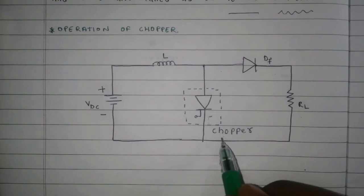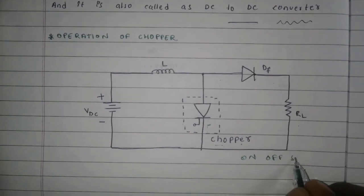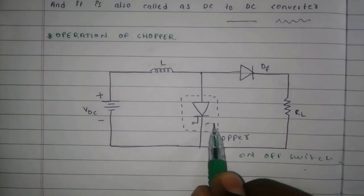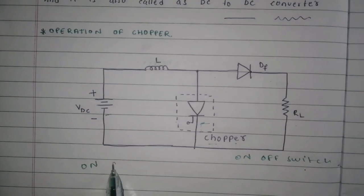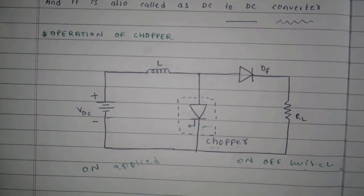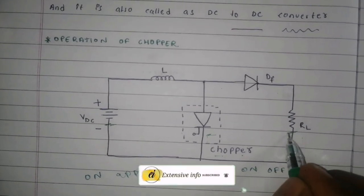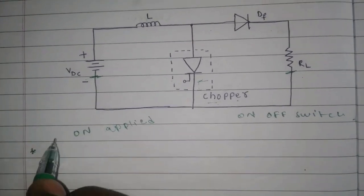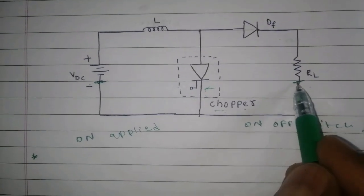This chopper is an on-off switch. The chopper is said to be on when power is applied, and it connects the load and supply. When the power is removed, it disconnects the load and supply.